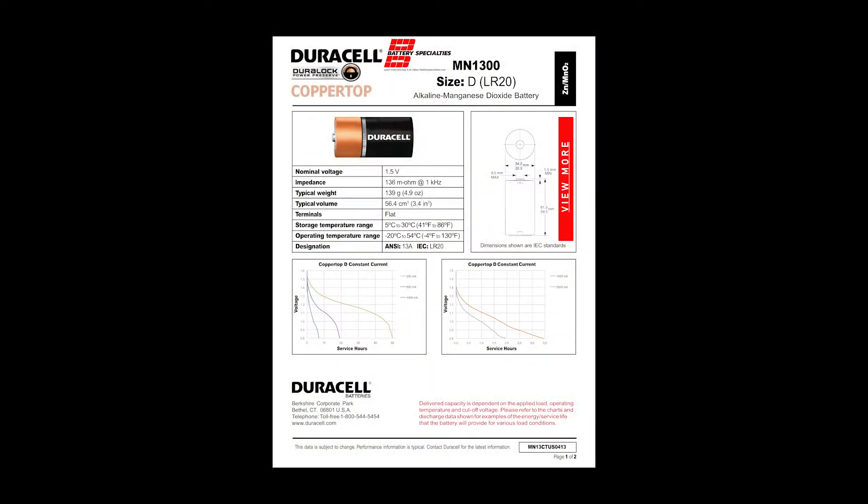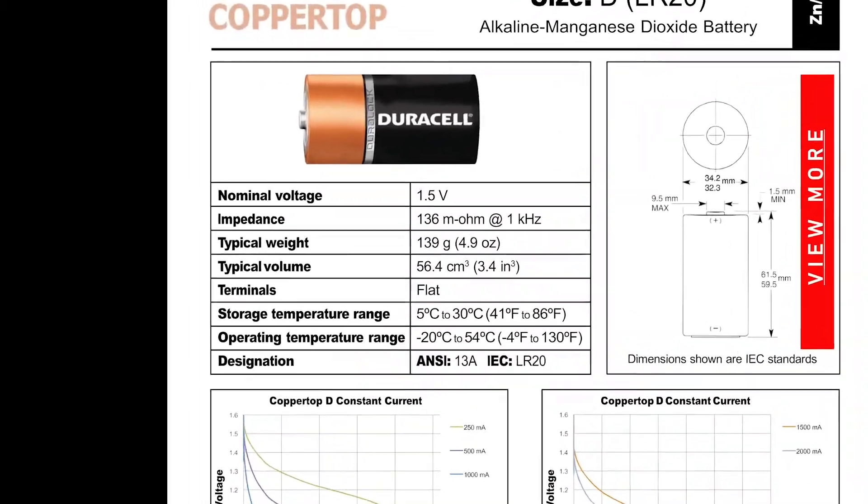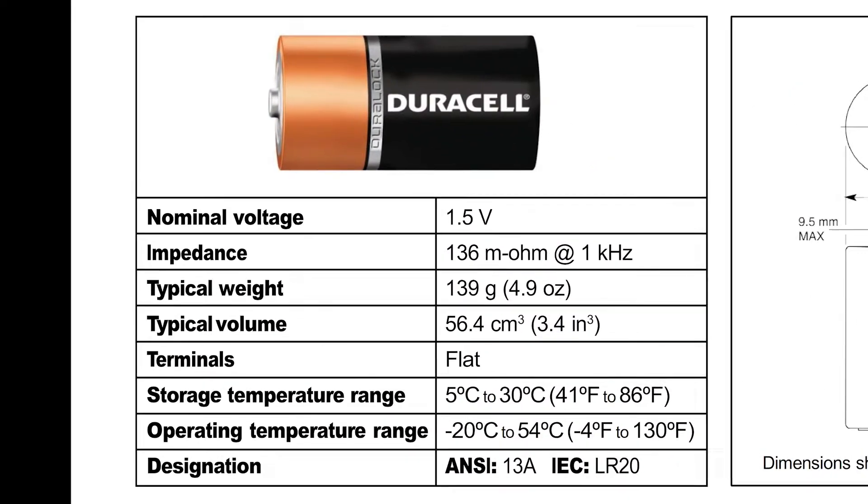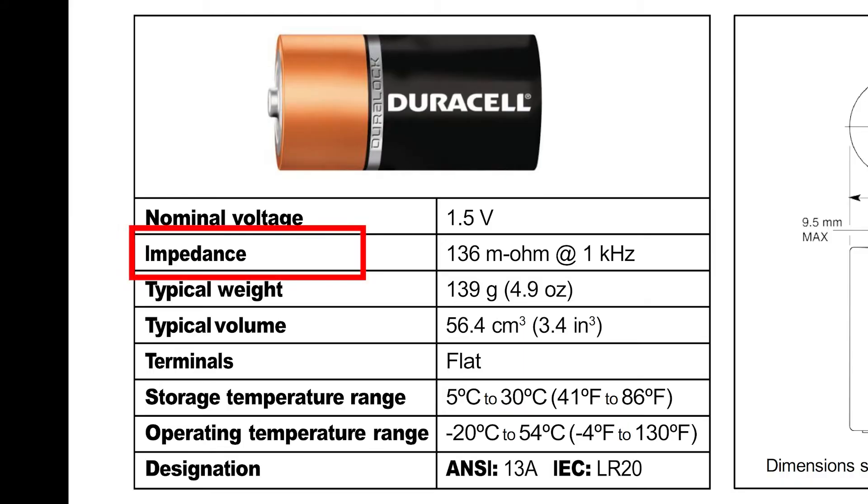As usual, the answer lies in a careful examination of the data sheet. So here we have the data sheet for a typical Duracell 1.5 volt D cell battery. If we look at the specifications, we find the parameter called impedance. Now for the purposes of this exercise, impedance and resistance are the same thing. Just know that the complete definition of impedance takes into account the frequency dependent effects of inductance and capacitance. But for now just think of it as the equivalent of resistance.